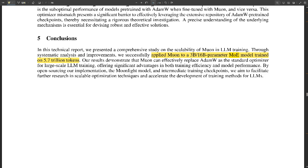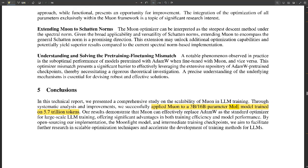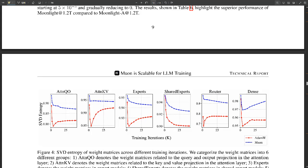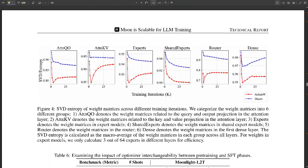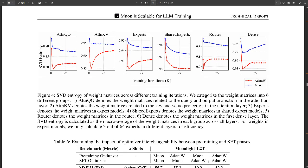So by combining Muon with this MoE architecture, they've created a model that's really powerful and really efficient. It seems like the big takeaway here is that they've achieved a sort of AI power couple. Yeah, that's a huge part of it. But what's even more exciting is what this could mean for AI in the future. Okay. You know, we're already seeing LLMs transforming so many fields, but it feels like we're just at the tip of the iceberg. It does feel like that.